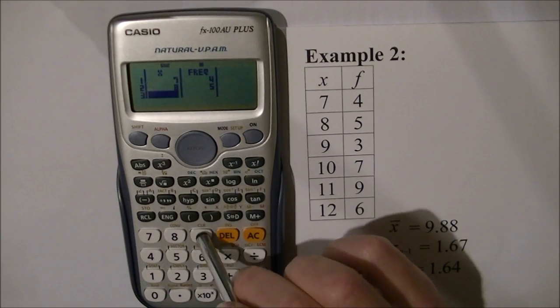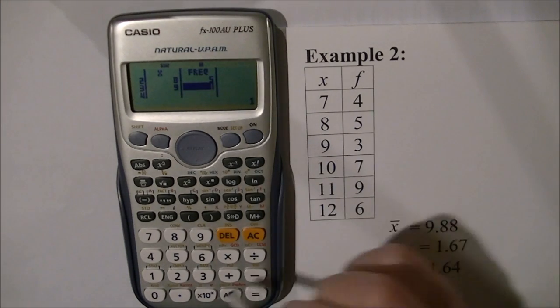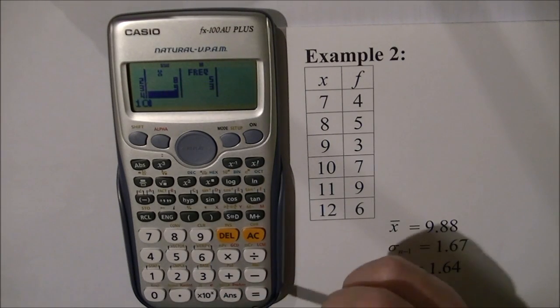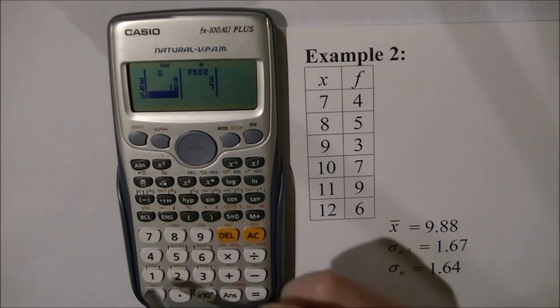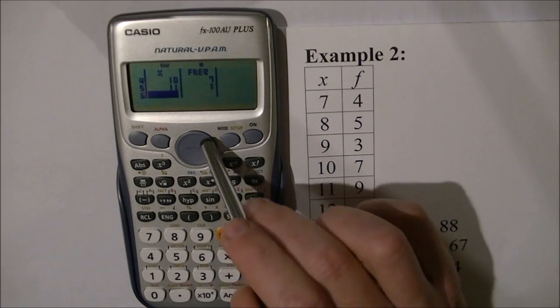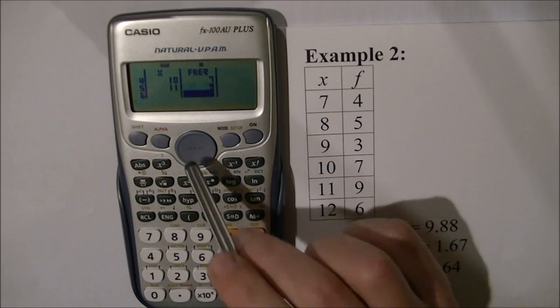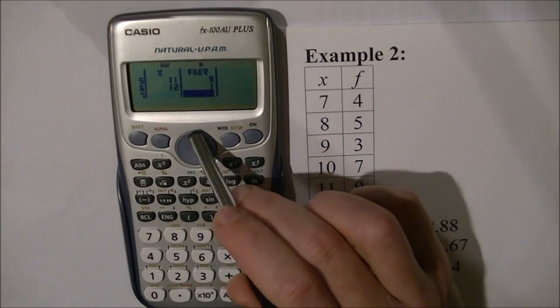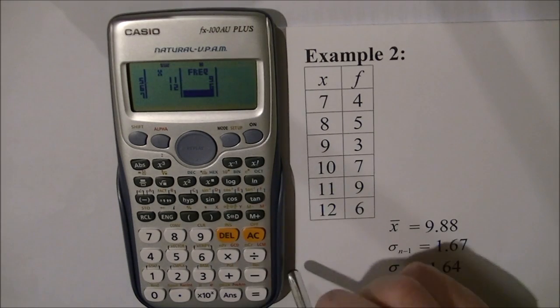Next is the score 9, equals, navigate and change to 3. Then 10, that's 7 times. Then 11, that's 9 times. Finally, score 12, that's 6 times. That's entered those scores.